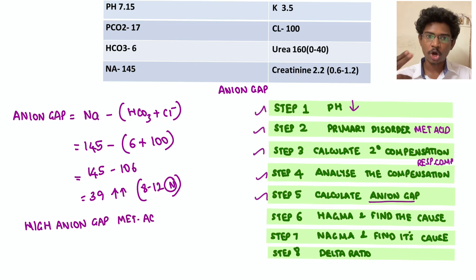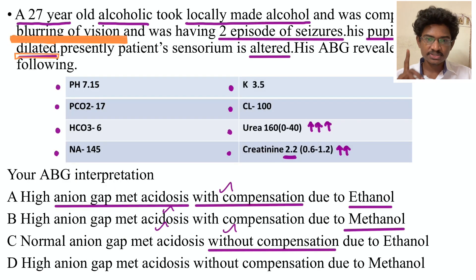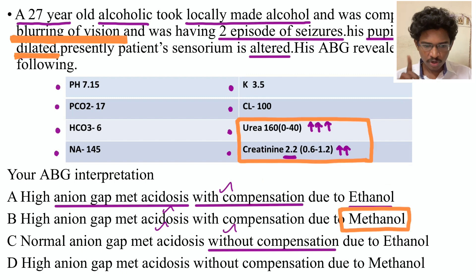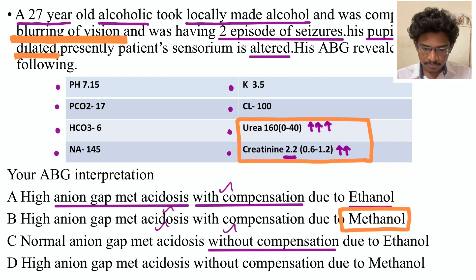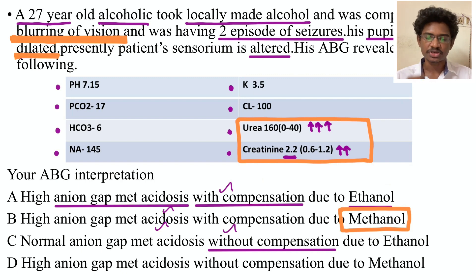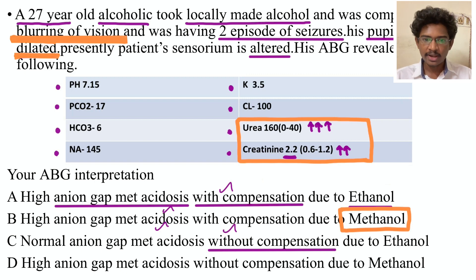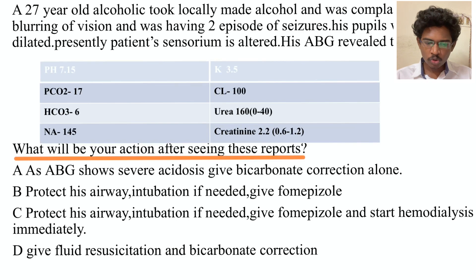Now find the cause from the clinical picture. The clue is locally made alcohol. Blurring of vision with alcohol points to optic neuritis — characteristic of methanol toxicity. Also, the KFT is deranged — acute renal failure also happens in methanol toxicity. All these indicate methanol toxicity. One part found from ABG, the other from history and investigations.